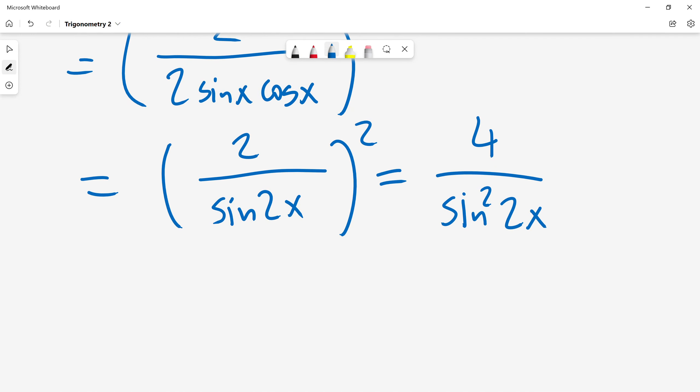Now I need to find the minimum value of this expression. The minimum value of this expression will be minimum when the denominator is biggest, when the denominator is maximum. So I will get minimum of this expression when sin squared 2x is maximum. So when sin 2x is one or negative one, plus or minus one.